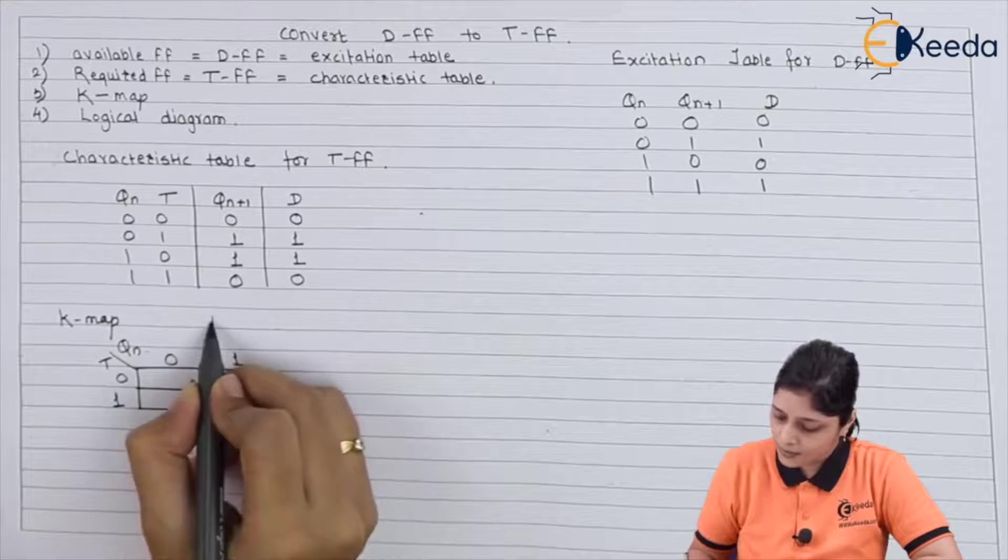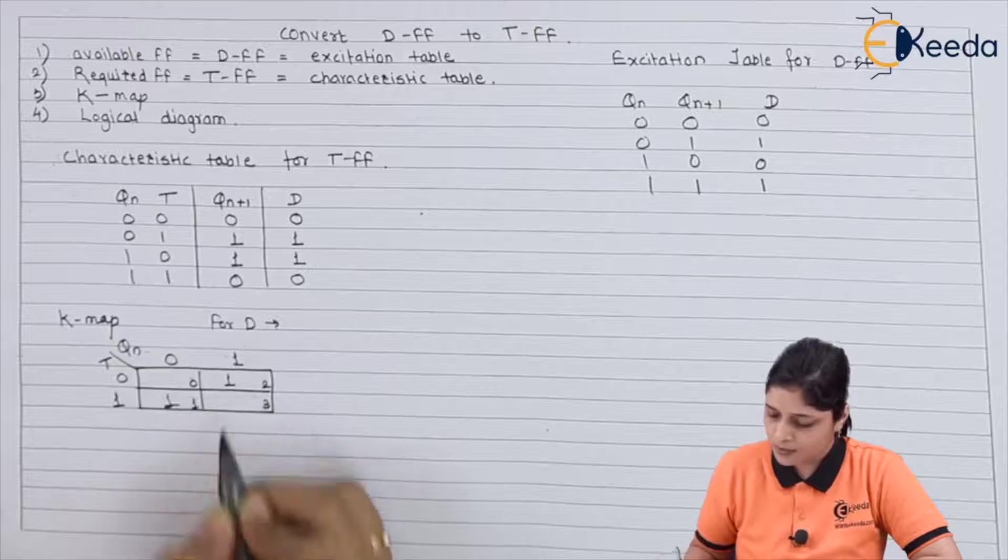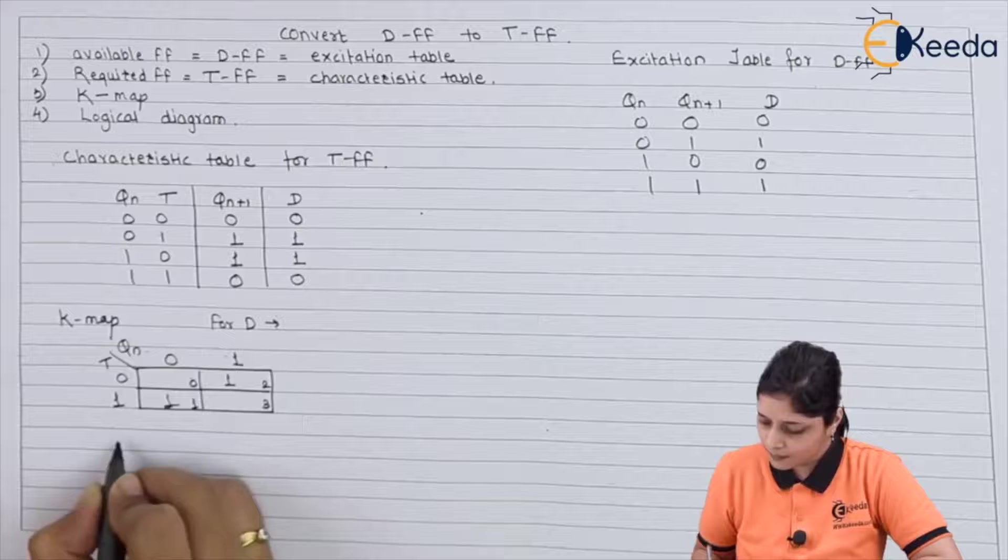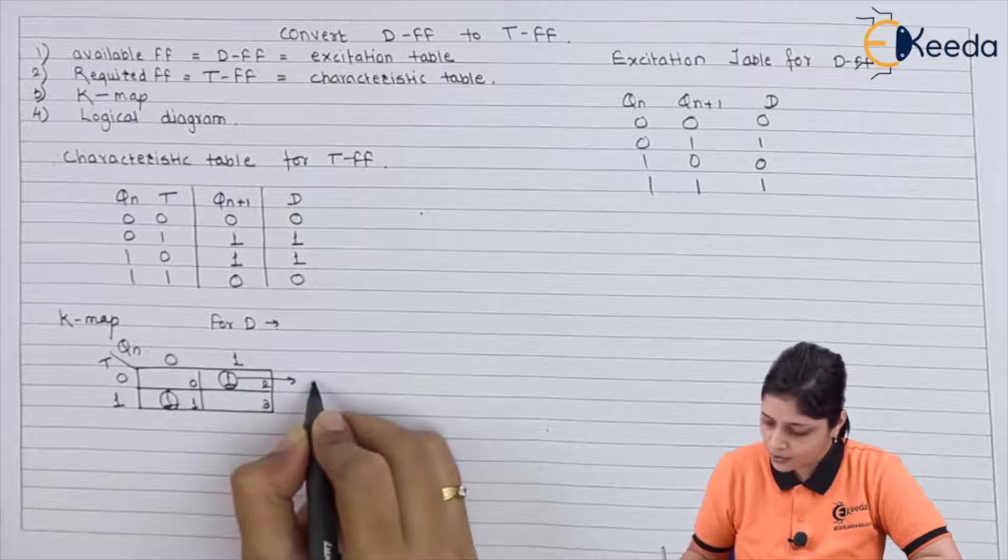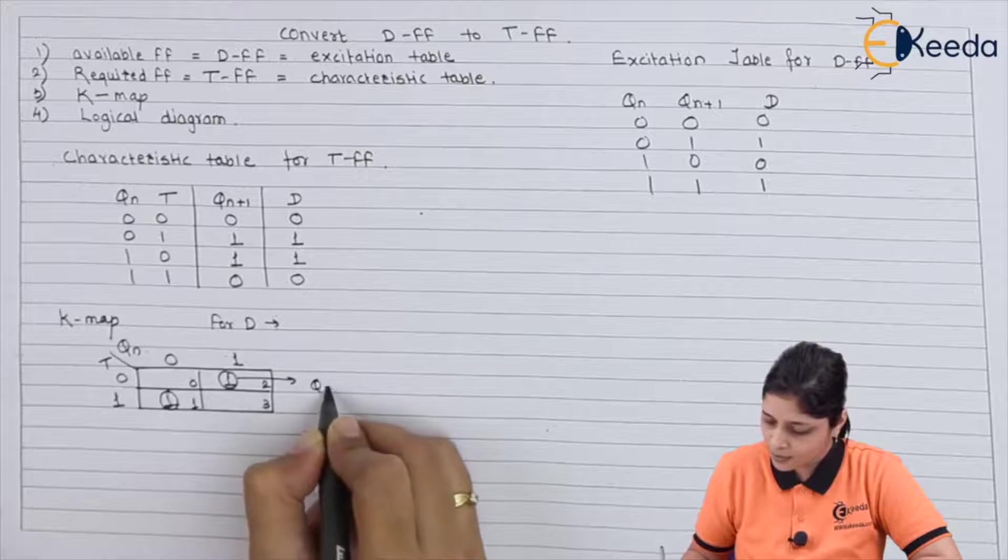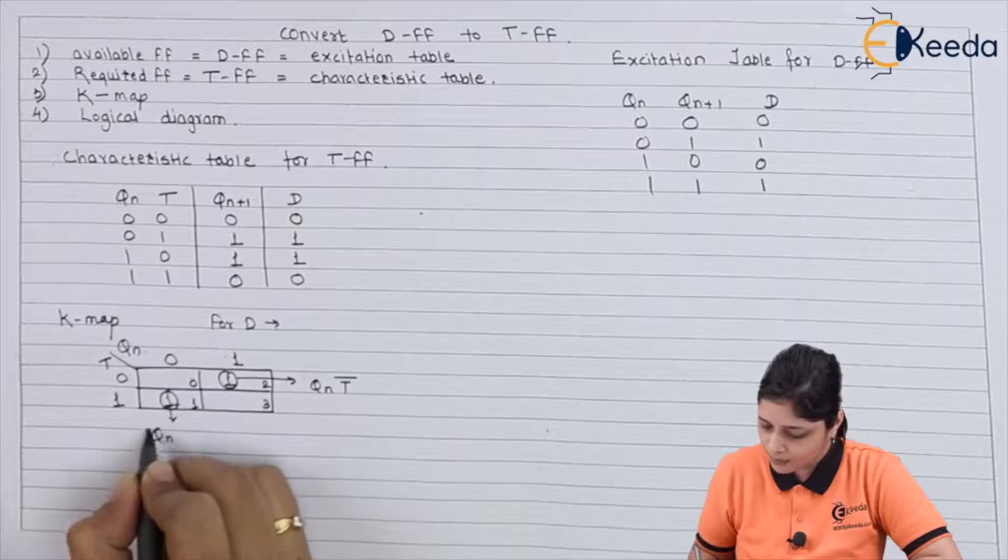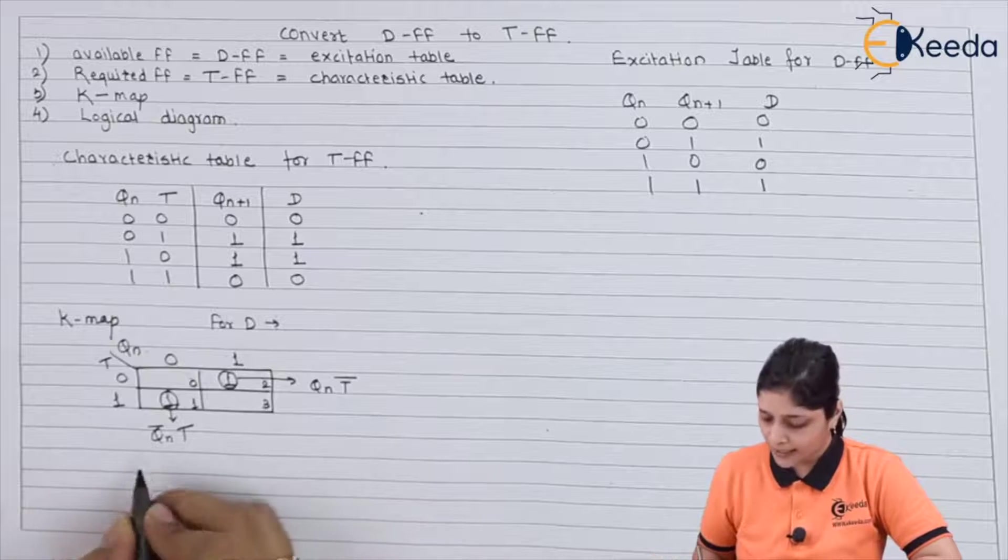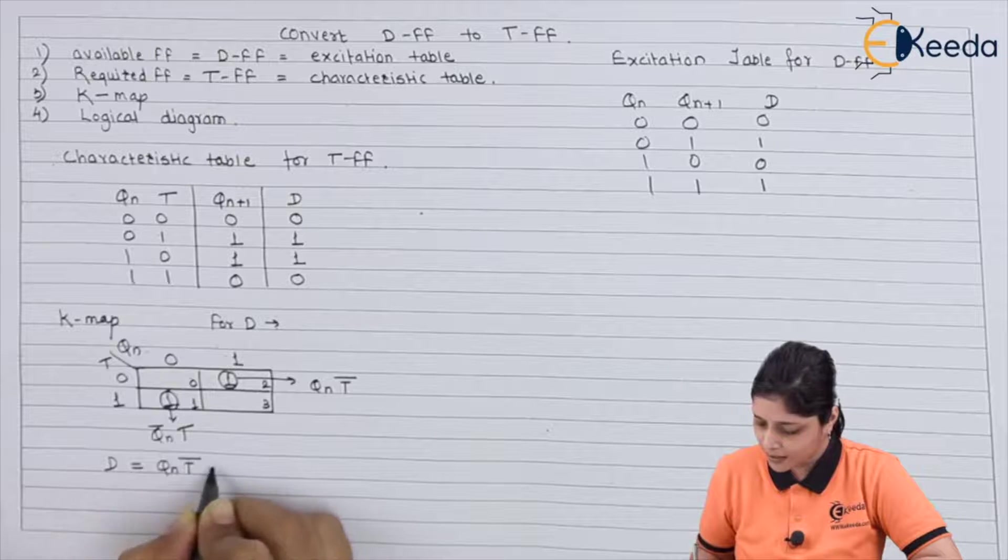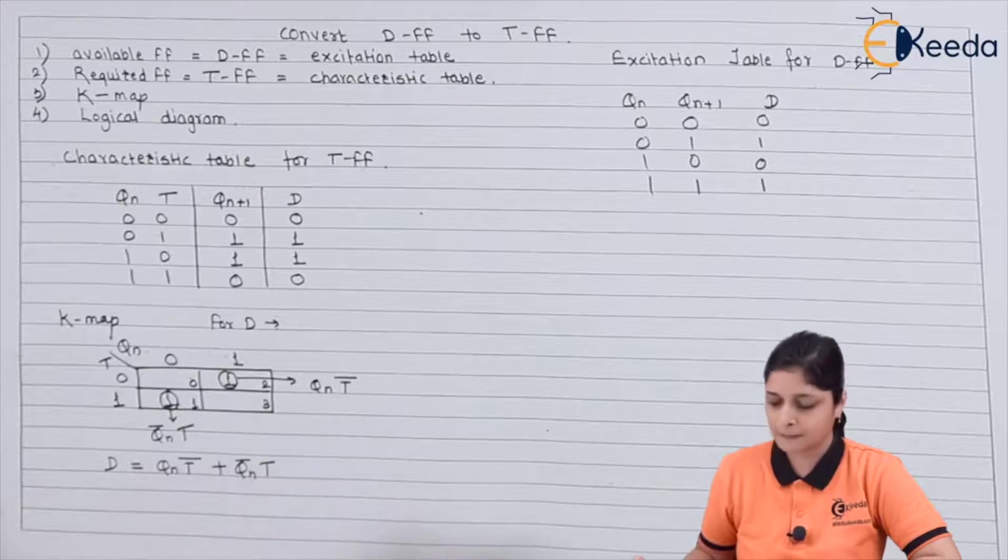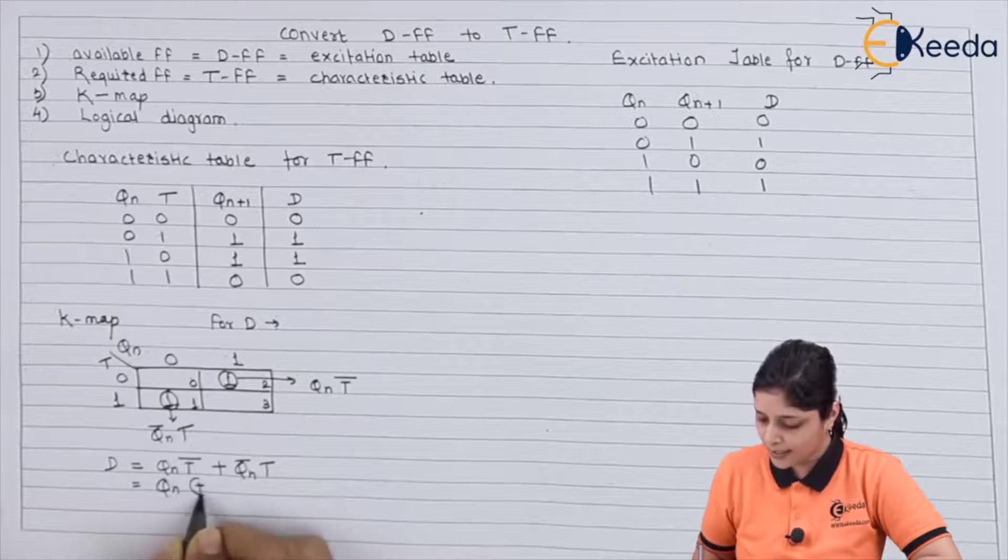K-map for D: 0 1 1 0. You can't make a group, so individually you have to write down the equations. The equation is: for this one, the term is Qn T bar, and for this one, Qn bar T. The final equation is D equals Qn T bar plus Qn bar T, or you can write minimized form Qn XOR T.